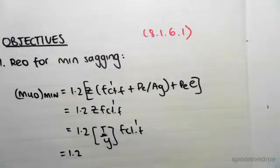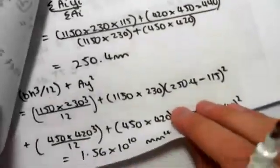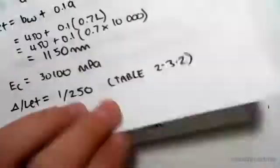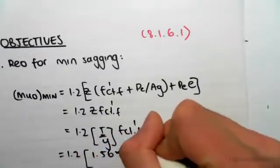Now, we know the I value. We've seen that in previous videos where we found that. We found the I value of our section to be 1.56 times 10 to the 10. So that was the I value.